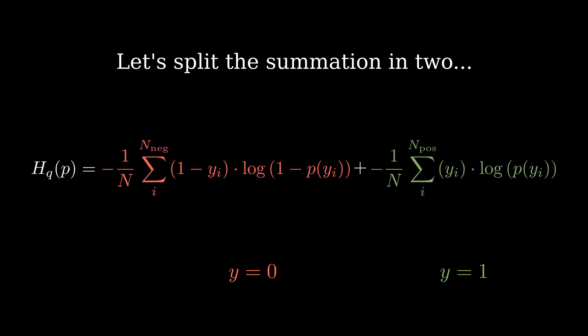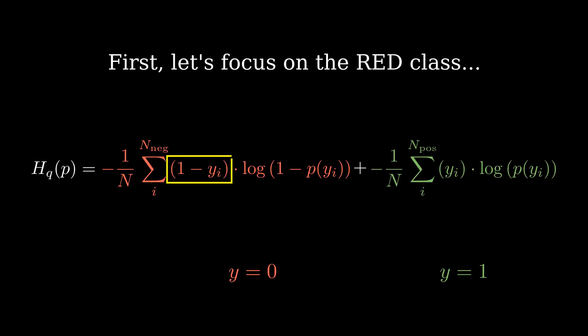Notice that each summation is using the points corresponding to its respective class only. First, let's focus on the negative, or red, class. Its label is 0, so this term is always going to be 1.